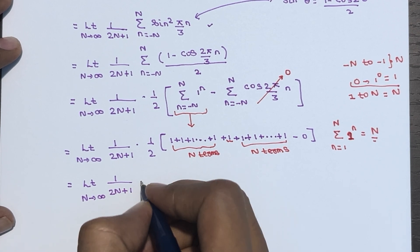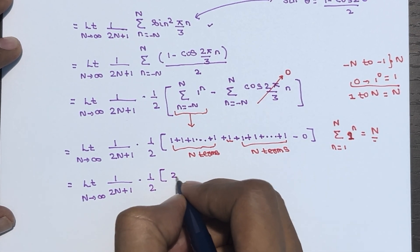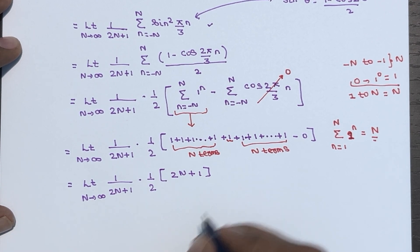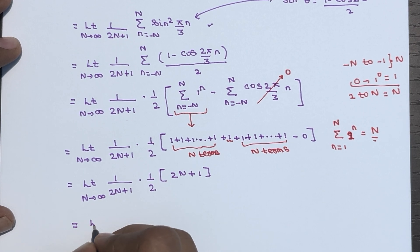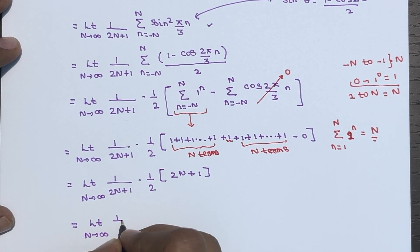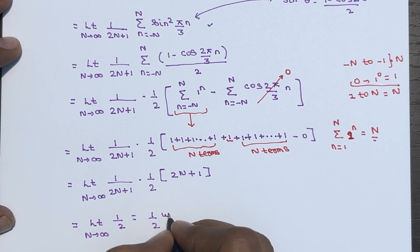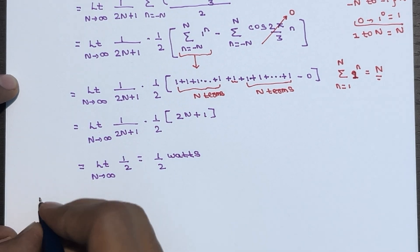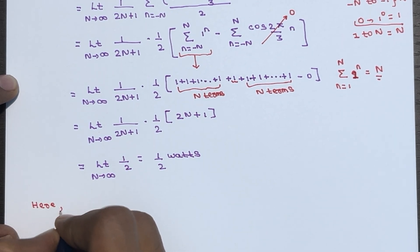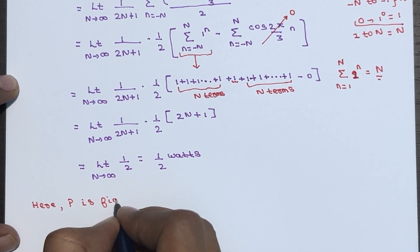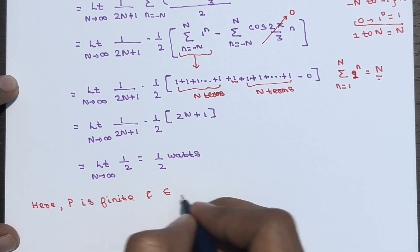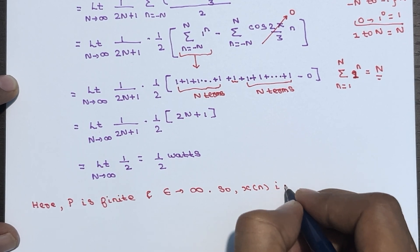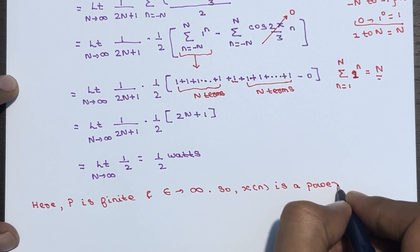So we get: lim(N→∞) [1/(2N+1)] · (1/2) · (2N+1). The (2N+1) terms cancel, leaving 1/2. Therefore average power P = 1/2 watts. Since P is finite and E is infinite, we conclude that x(n) is a power signal.